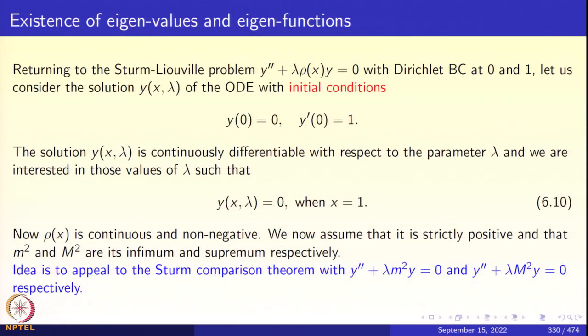Let us return to the proof of the existence of eigenvalues and eigenfunctions, and recapitulate what we did last time. We got the differential equation y'' + λρ(x)y = 0. We take the initial value problem y(0) = 0, y'(0) = 1, and the solution is unique — y(x, λ) depends continuously, smoothly, and analytically with respect to λ.